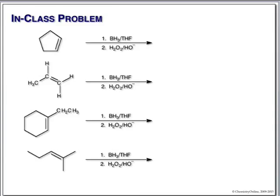Here we have BH₃ in THF followed by alkaline peroxide. We know this is also going to give us an alcohol, but the regiochemistry is anti-Markovnikov. This will form an intermediate borane. The second step — alkaline peroxide — simply removes the boron and replaces it with the hydroxyl group. The addition of the hydrogen and the hydroxyl group is cis to each other. For the first two examples, all we have to do is place our hydroxyl group on the appropriate carbon.